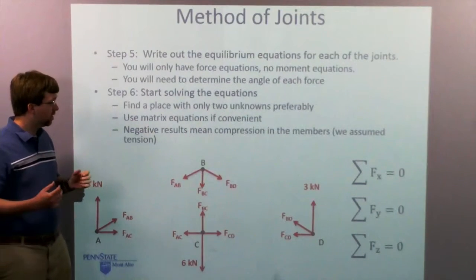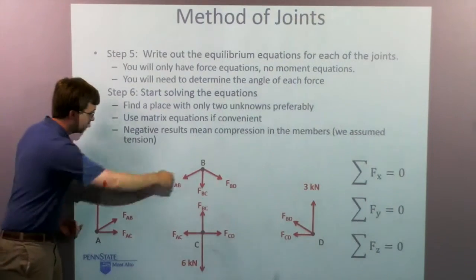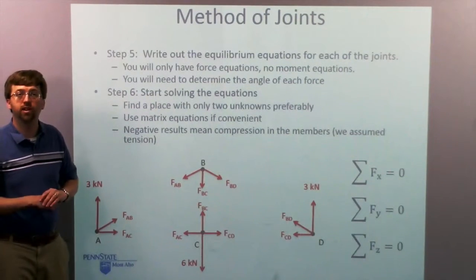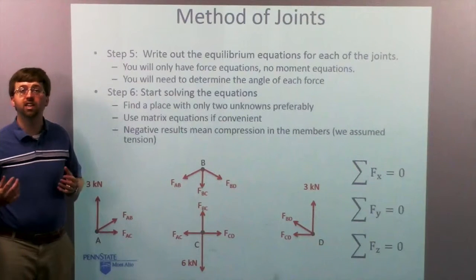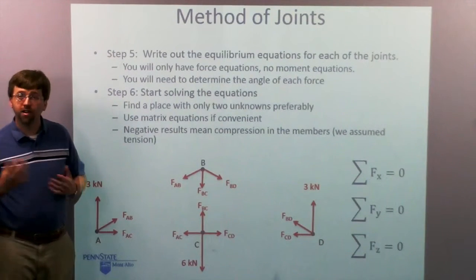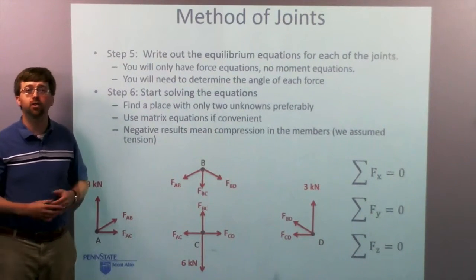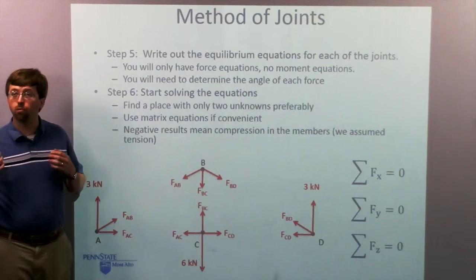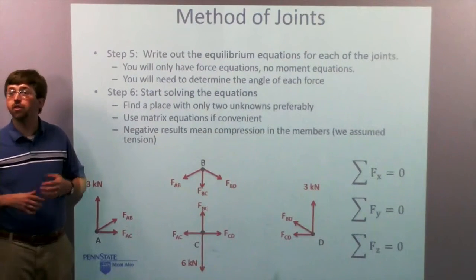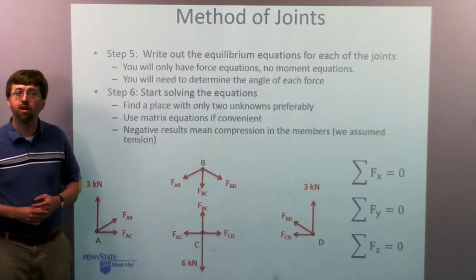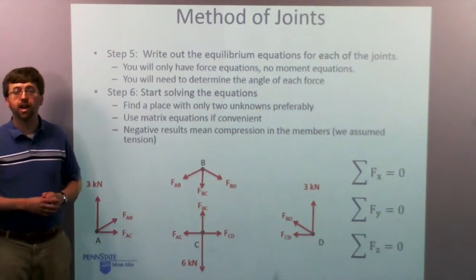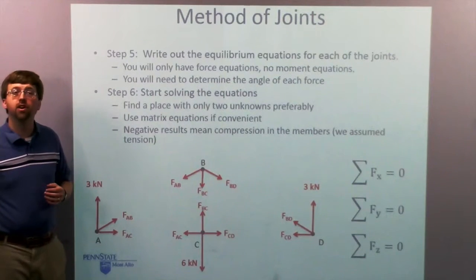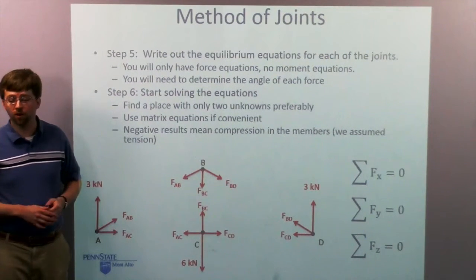If I get negative results, initially I've assumed everything is tension, everything is pulling on these joints. If I get negative results, that's going to indicate that the beam is actually in compression. So positive results is tension, negative results is compression. And once I figure out all of my unknowns, that's what the method of joints is about. I've figured out the forces that are acting on these beams. I can use that later on to figure out how strong I need to make these beams or if these beams are going to break under loading.